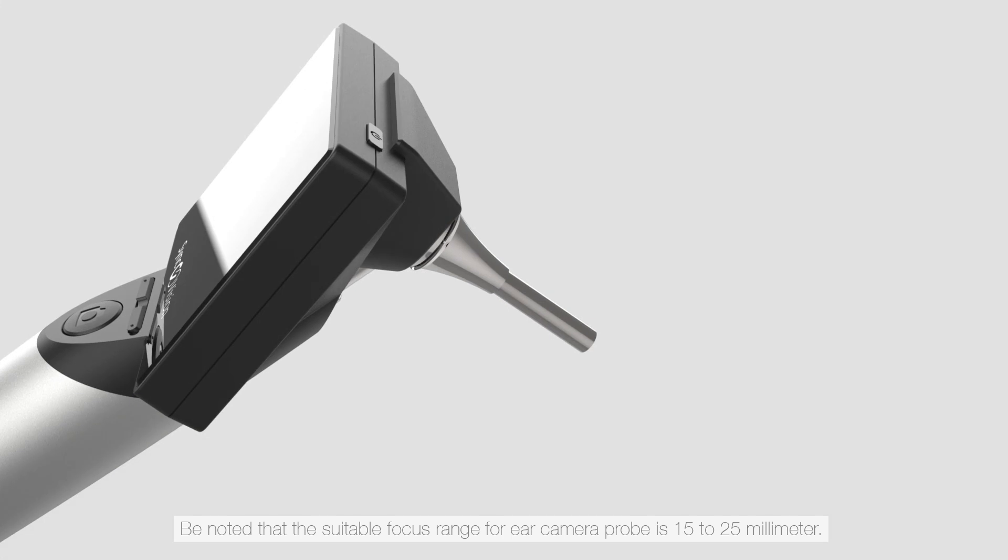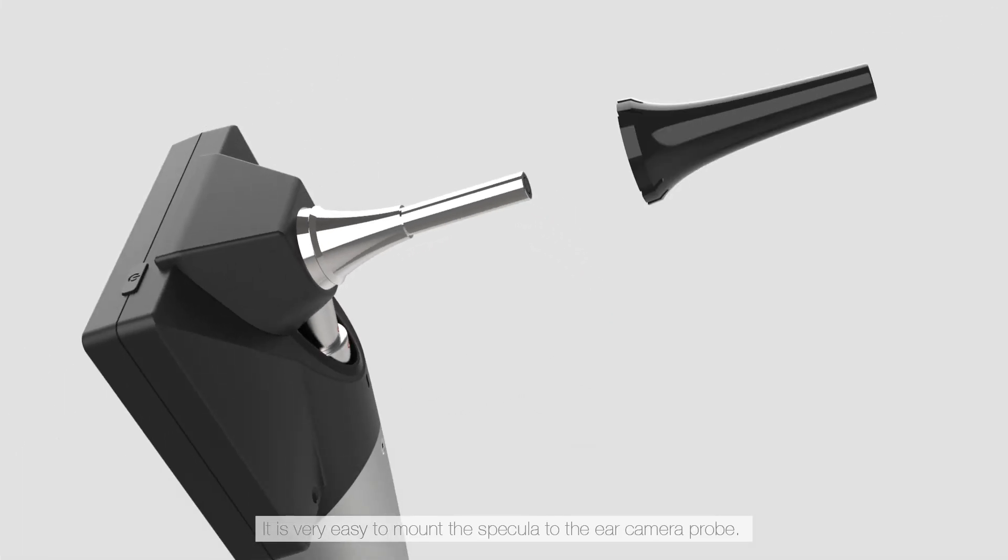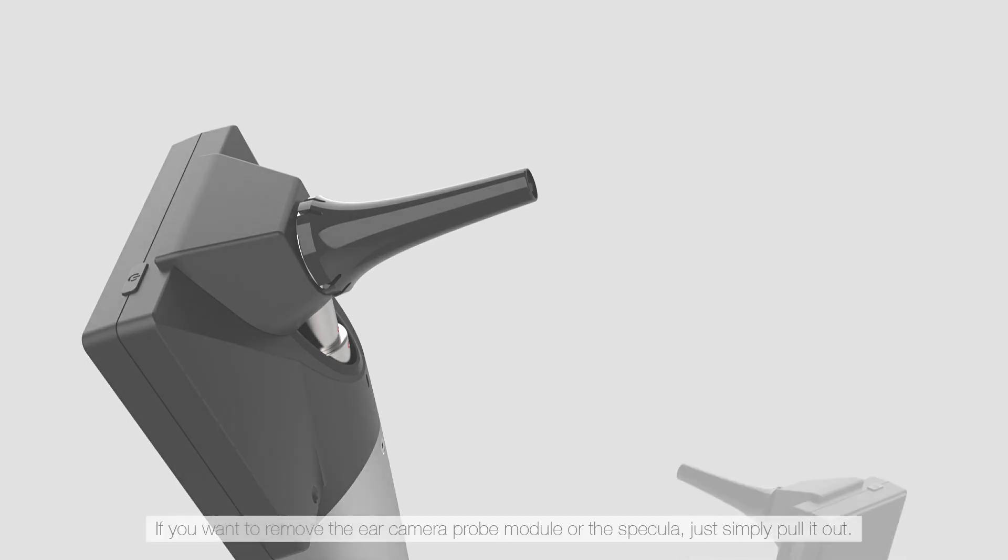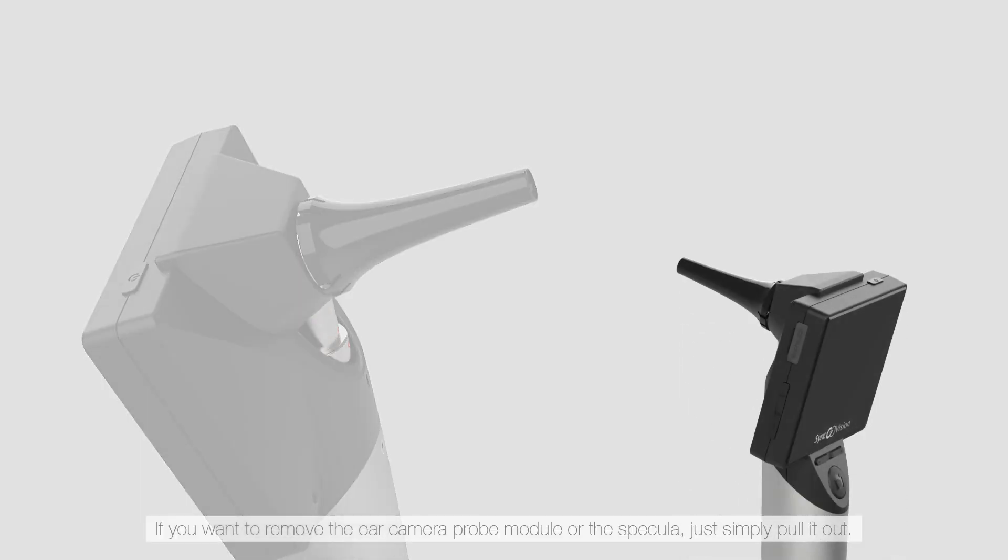Be noted that the suitable focus range for ear camera probe is 15 to 25 mm. It is very easy to mount the specula to the ear camera probe. Simply put the specula on and apply pressure on it. A clicking sound will appear indicating it is fixed in place. If you want to remove the ear camera probe module or the specula, just simply pull it out.